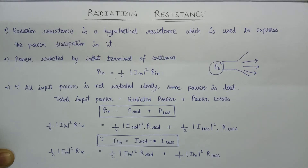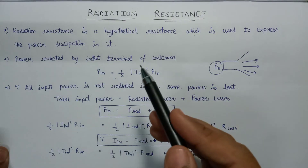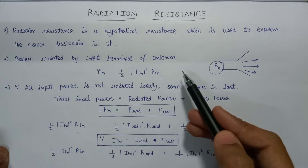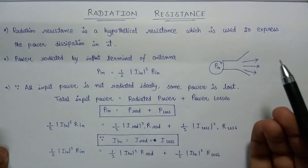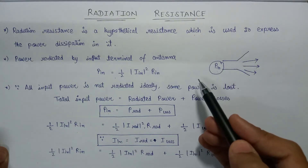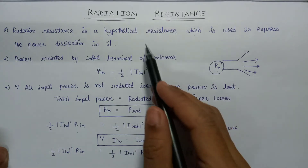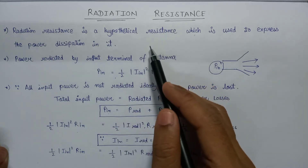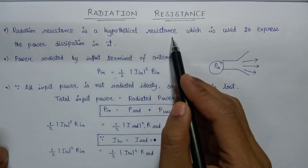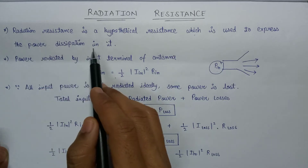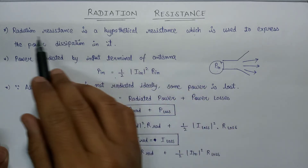In this lecture we are going to start a new topic: radiation resistance. Whenever we supply power to the input terminal of an antenna, most of the power is radiated, but some amount is lost due to conduction losses or dielectric losses. Radiation resistance basically focuses on the power dissipation by an antenna — it is a hypothetical resistance used to express the power dissipated in it.